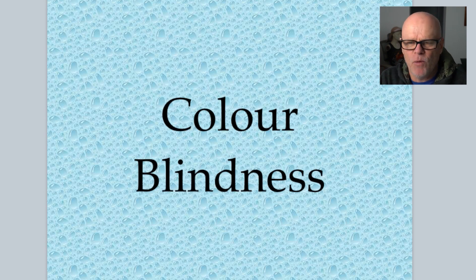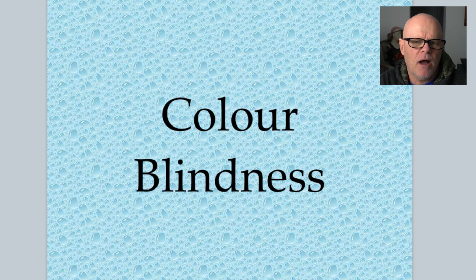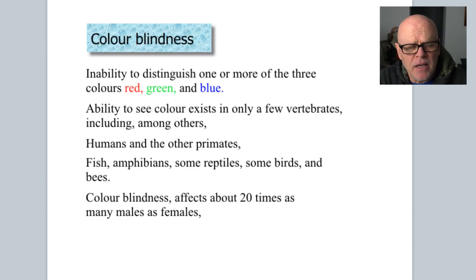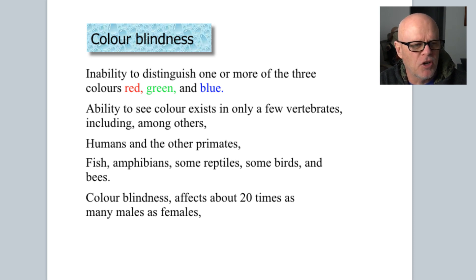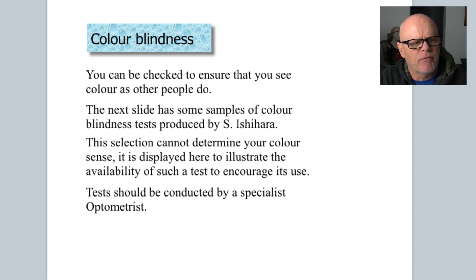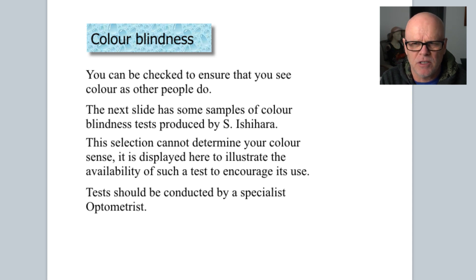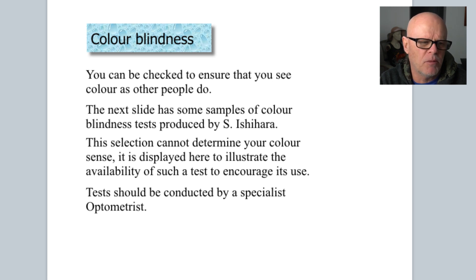Another thing I wanted to talk about is if you are serious about getting into colour — and I taught this colour theory for years at university — there are quite a lot of people that are colour blind and don't know it. You should go and have a test done if you're worried about that. Colour blindness is basically the inability to distinguish one or more of the three colours red, green and blue. The ability to see colour exists in only a few vertebrates, including humans and other primates, some fish, birds and bees. Also, colour blindness affects about 20 times more males than females. I've grabbed this Ishihara test just to illustrate — don't take this as gospel, as it's just a screen grab.